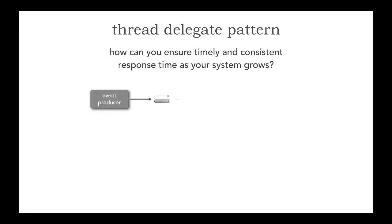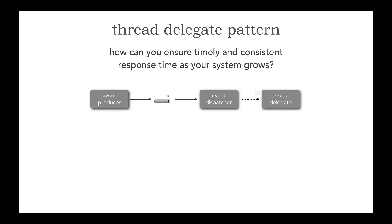The thread delegate pattern looks as follows. We have an event producer that's sending events to an event dispatcher. These could be orders, trades, claims, requests for reports — any kind of business transaction. That event dispatcher picks up that business transaction and then delegates it to a thread delegate, hence the name thread delegate pattern. The dispatcher sends that message over to the thread delegate, which processes that message. It also has an internal queuing mechanism. If a response is needed back to that event producer, it's up to the thread delegate to send that response back.